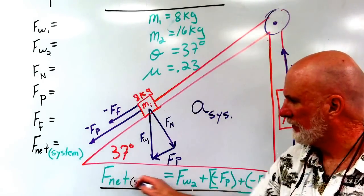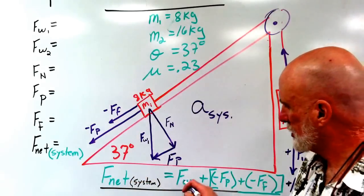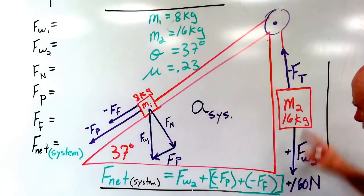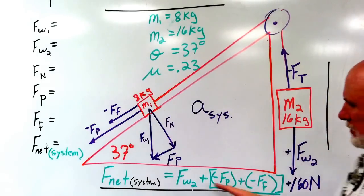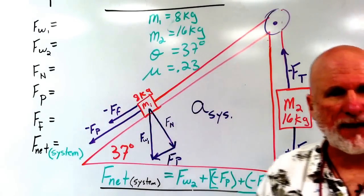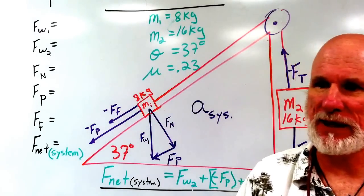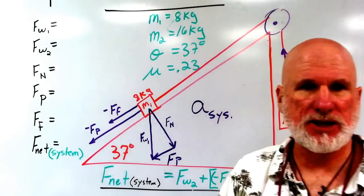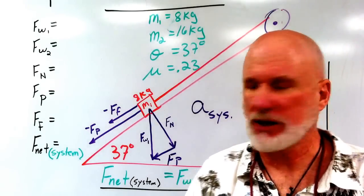The net force on the system is going to be this force plus FF and FP. Now, usually FP is positive, but that's because it's usually in the direction of the motion.